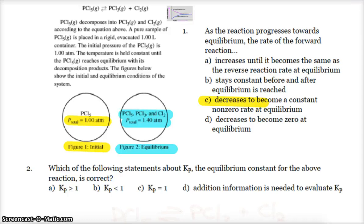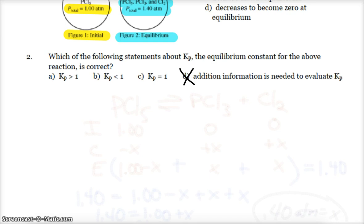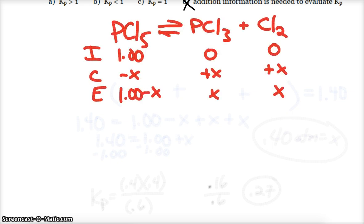Question two is kind of fun, because it says, which of the following statements about Kp, the equilibrium constant for the above reaction, is correct? Don't fall into the game, okay? When they ask if you need additional information, typically not. There's enough information to be solved. If we're looking to find the value of Kp, we should hopefully be thinking of ICE, ICE baby. So we have our reaction, the decomposition of PCl5. Hopefully you can recognize there's my ICE table.